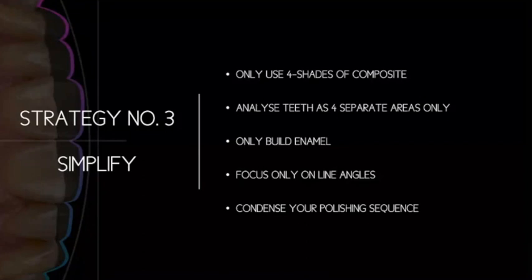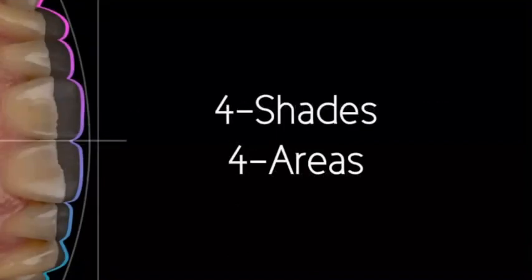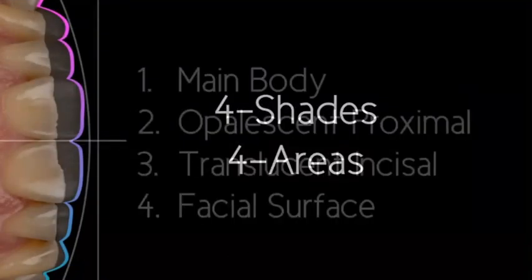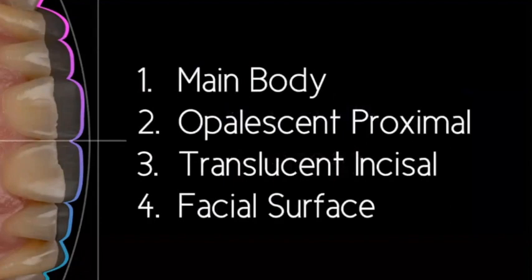With four shades, four areas, nice line angles, and a couple of finishing steps to polish: efficient, predictable, cost-effective — and that's what we're after right now. The four areas are: the main body of the tooth, the opalescent proximals (sides of the tooth), the translucent incisal part at the top plus or minus a halo, and the facial surface enamel. Think of it like a box: the sides are the opalescent proximals, the top is the translucent incisal, fill the box with a body shade, and put a lid on with a final facial surface layer.